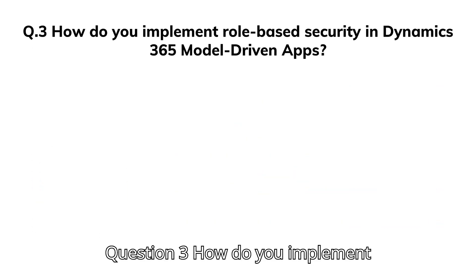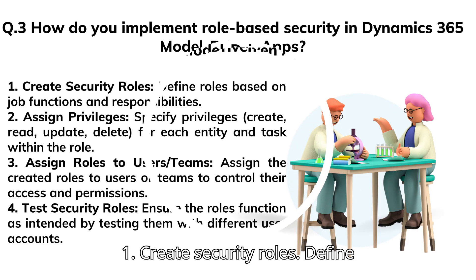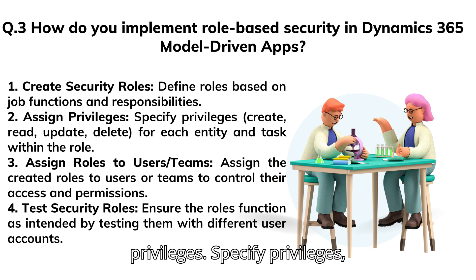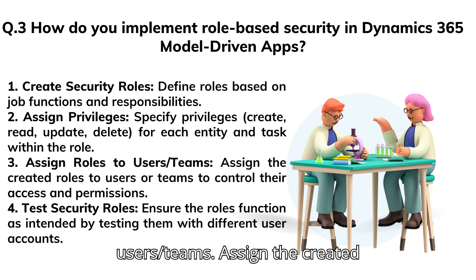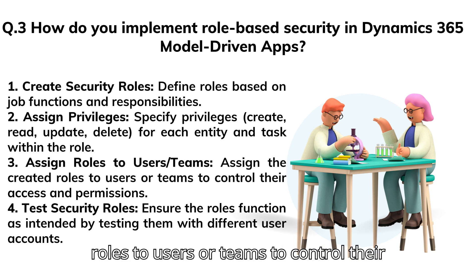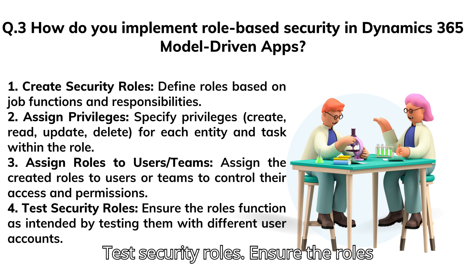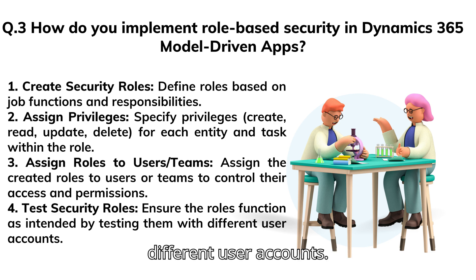Question 3: How do you implement role-based security in Dynamics 365 model-driven apps? 1. Create security roles: define roles based on job functions and responsibilities. 2. Assign privileges: specify privileges — create, read, update, delete — for each entity and task within the role. 3. Assign roles to users or teams to control their access and permissions. 4. Test security roles: ensure the roles function as intended by testing them with different user accounts.